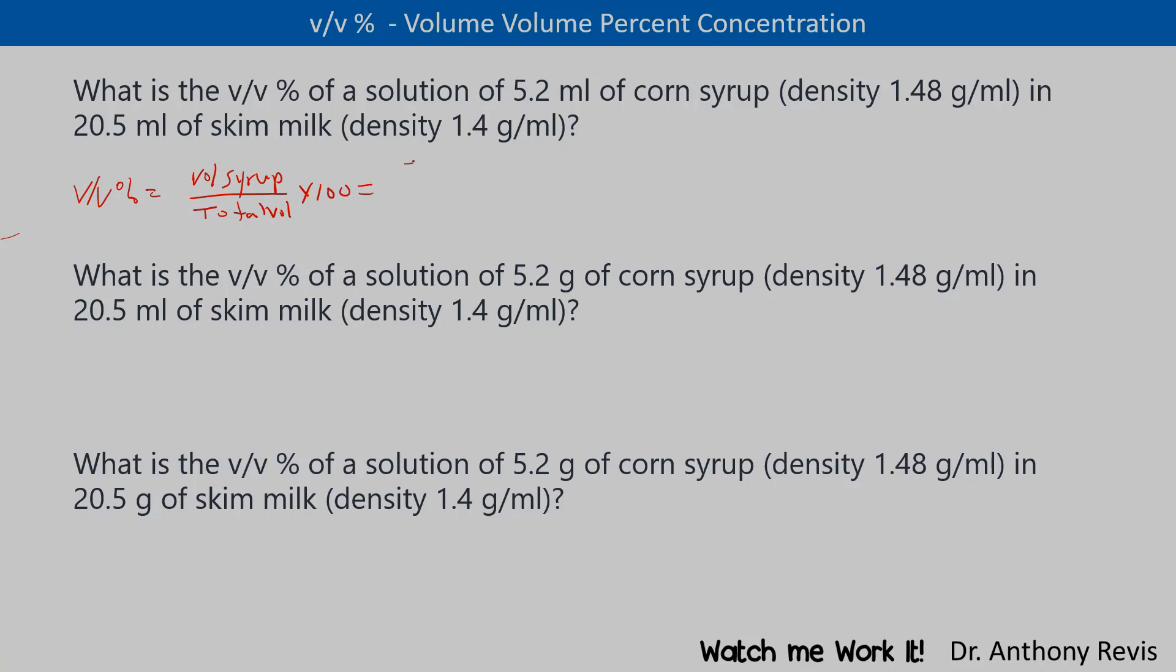So here we would take the 5.2 mils and we divide it by the total volume, which is 5.2 mils plus the mils of the skim milk, which is 20.5 mils. And that works out pretty good. This example of volume-volume.